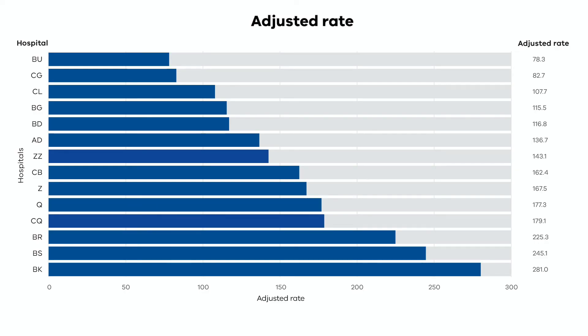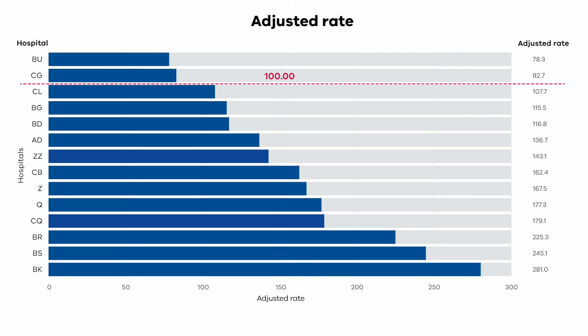Adjusted rates provide each health service with an expected rate based on the population they work with. Age, gender, complexity of conditions, and social and demographic information affect these adjusted rates and help provide a better comparison of results. In adjusted rates, 100 is the expected result for a health service. So if a health service result is below 100, it is performing better than expected.